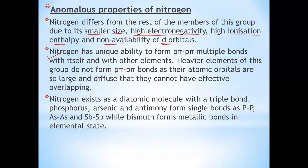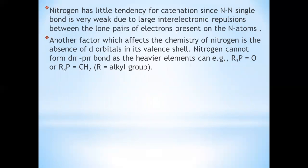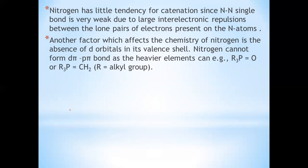Reactivity towards halogens: these elements react to form two series of halides, EX3 and EX5. Nitrogen does not form pentahalide due to non-availability of d orbitals in its valence shell. All halides are stable except nitrogen halides. In the case of nitrogen, only NF3 is known to be stable. The instability of NCl3, NBr3, and NI3 is due to the weakness of the nitrogen-halogen bond caused by the large difference in size between nitrogen and halogen atoms. But the size difference between nitrogen and F is small, so the N-F bond is strong. Trihalides, except BiF3, are covalent in nature.